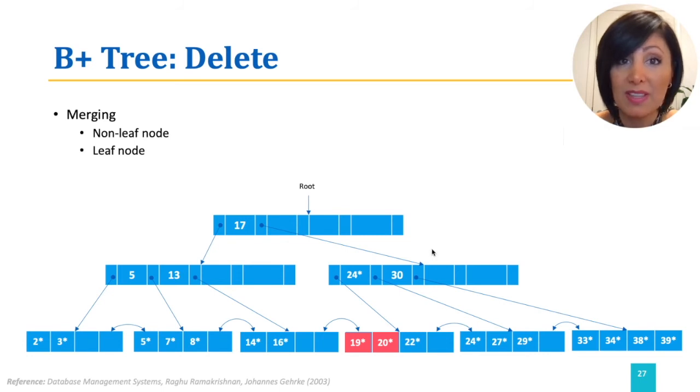We can deal with the situation with redistribution. We simply move the entry 24 from the sibling node to the leaf page that previously contained 19 and 20. This will also need propagating the change to the parent nodes, and updating the new low-key of the parent page from value 24 to value 27.